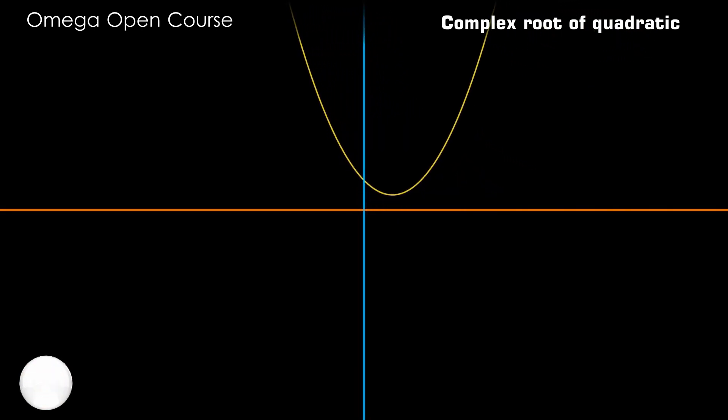If the graph does not intersect the x-axis then draw a vertical line passing through the vertex of the parabola. The value of x where this line intersects the x-axis gives the real part of the root.